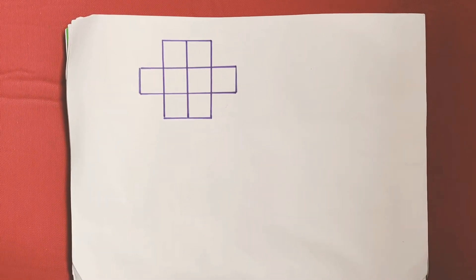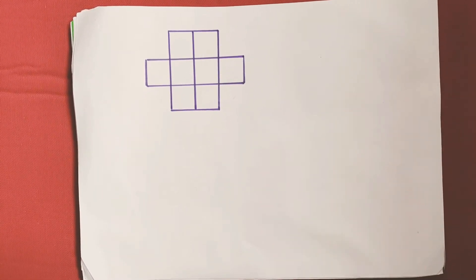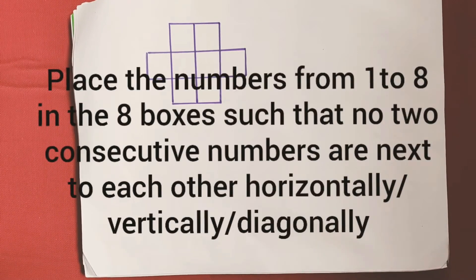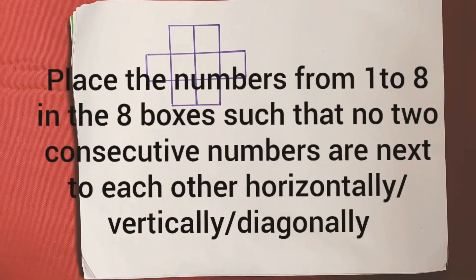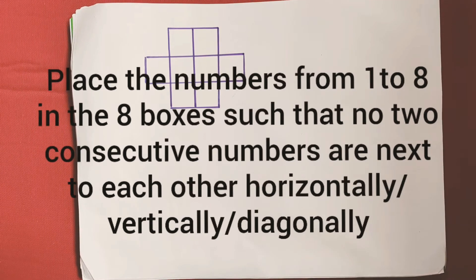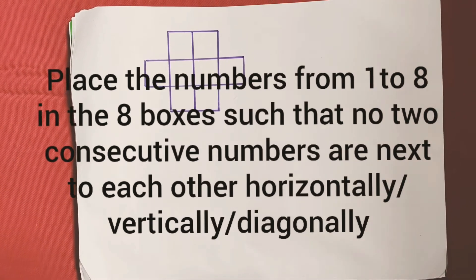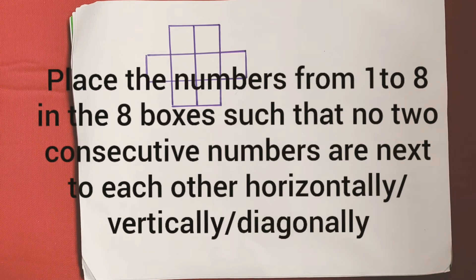Welcome to Learn with Sam. Let me show you the puzzle. We have to put numbers from 1 to 8 in this grid, but the only rule is that no two consecutive numbers are next to each other horizontally, vertically, and diagonally.